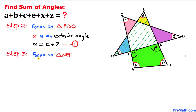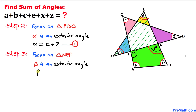Now let's focus on this other triangle NEF. We can see that angle beta is our exterior angle, and that is equal to the sum of the two opposite interior angles e and x. Therefore we can write: angle beta = e + x. Let's call this equation number two.